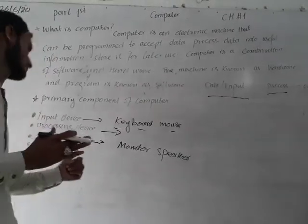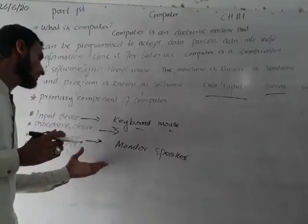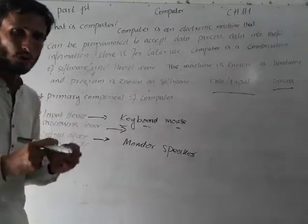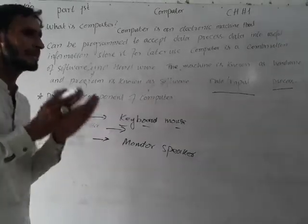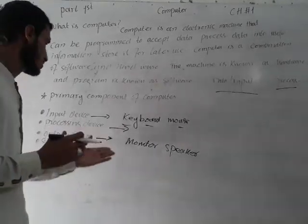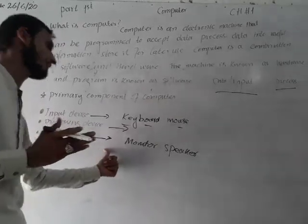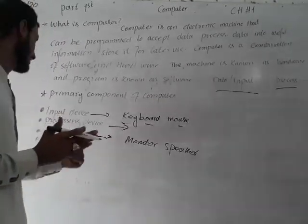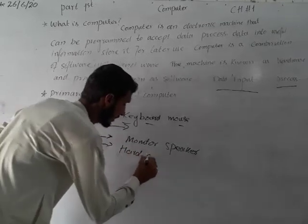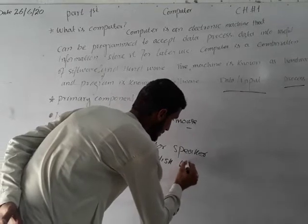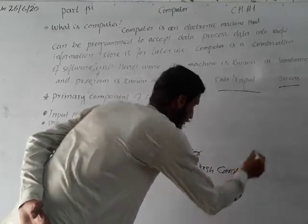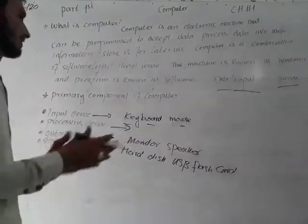The storage device is used to store data. Some storage is temporary, while other storage devices store data permanently. Examples include a USB drive as a storage device.